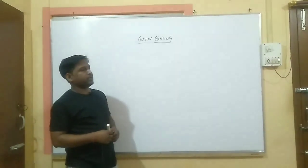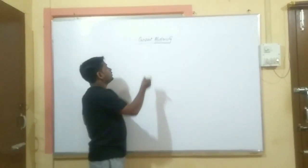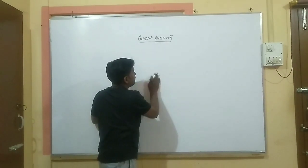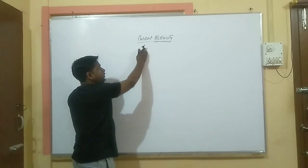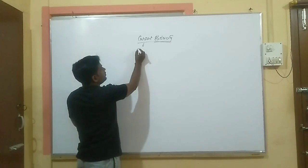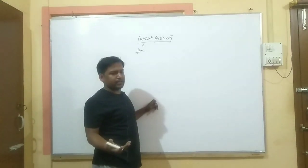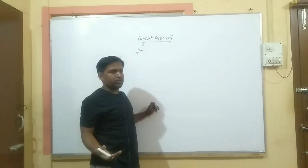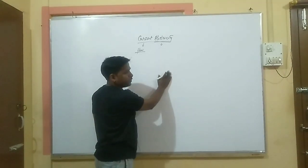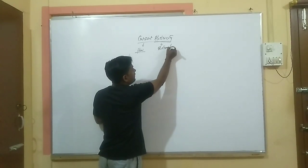Since we are going to discuss current electricity, let's first interpret the name. We see that there are two terms: one is current and the other is electricity. Current doesn't mean electric current — current means it is a flow. This flow may be of anything like water current, electric current, or some other. And the word electricity is actually derived from electron, or in other words, it also means charge.